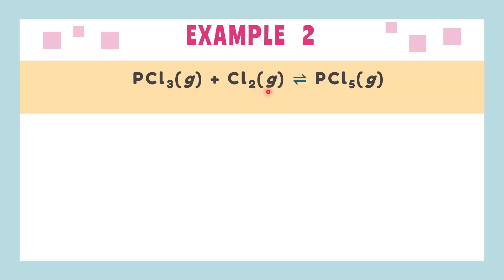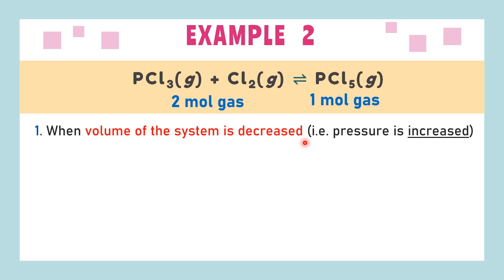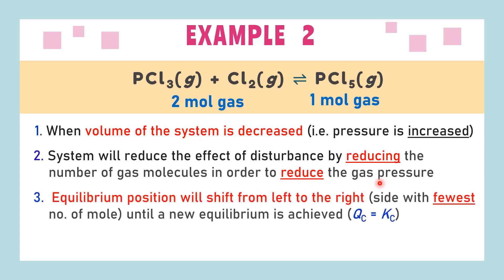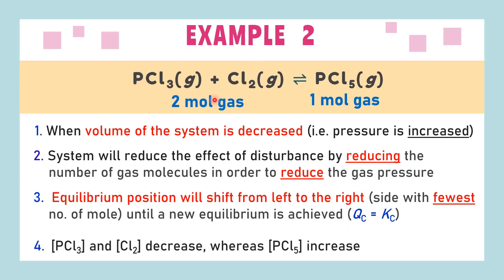When given a disturbance in terms of pressure or volume, first take out the number of moles on both reactant and product sides. The reactant side has a total of 2 moles whereas the product side has only 1 mole. For this example, we are going to disrupt the system by decreasing the volume of gas, which is the same as increasing pressure. The system will reduce the effect by reducing the number of gas particles, so equilibrium shifts from left to right toward the side with fewer moles. Concentrations of both PCl3 and Cl2 decrease whereas concentrations of PCl5 increase.